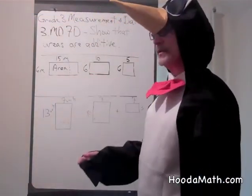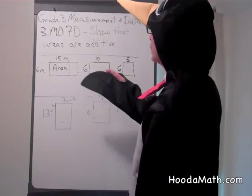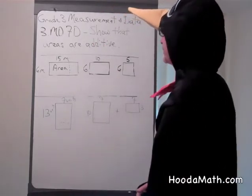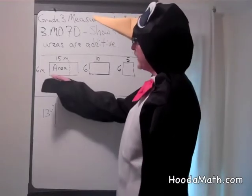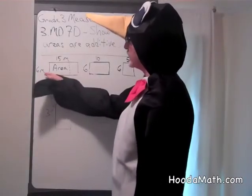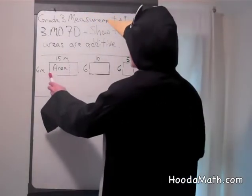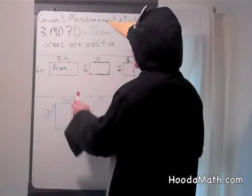Sometimes it is helpful to find that areas of a rectangle are additive. For example, if we had an area of this rectangle, which is 6 meters by 15 meters, we can split the area into two sections.